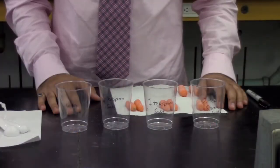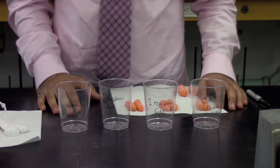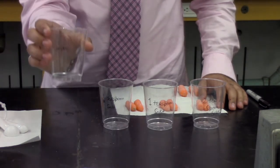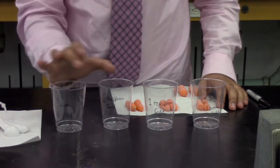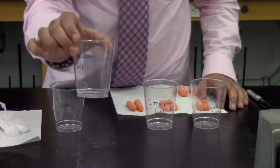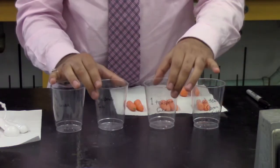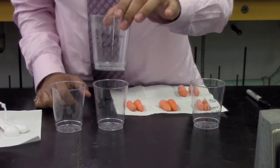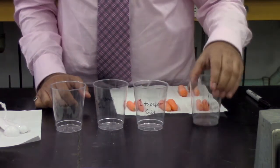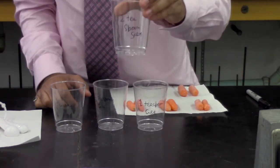Next, let's test hypertonic and hypotonic solutions. Label one cup water, label a second cup as half teaspoon salt, a third cup as one teaspoon salt, and finally label a fourth cup two teaspoon salt.